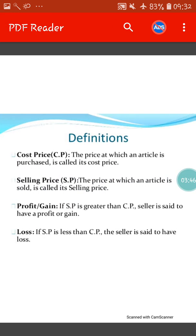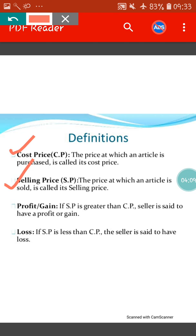So we will see a few definitions here. Cost price: the price at which an article is purchased is called its cost price. Selling price: the price at which an article is sold is called its selling price. Profit: if selling price is greater than cost price, the seller is said to have a profit or gain. And loss: if selling price is less than cost price, the seller is said to have a loss.